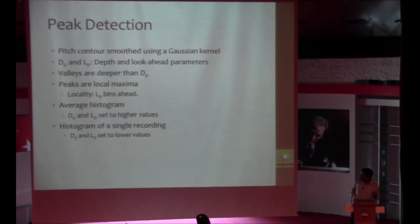So now we go through the peak detection thing. Each histogram is smoothed using a Gaussian kernel and a local maxima is labeled as a maxima only if it has two values deeper than the depth parameter and if it is also the maxima in a range of bins specified by the look ahead parameter. And as I said for average histogram DP and LP are set to very high values so that it picks only very relevant peaks. And further it might skip the peaks which have a low amplitude. So we added peaks from octave higher and octave lower for all the peaks which are picked up in the reference peaks. And we use these reference peaks to correct the peaks from the histogram of a single recording.